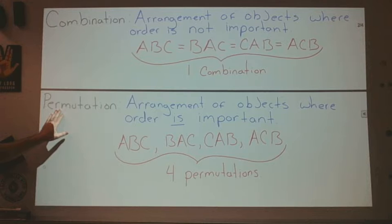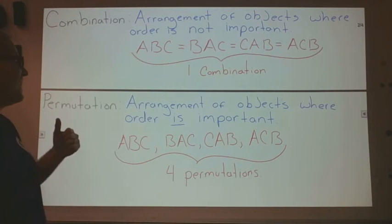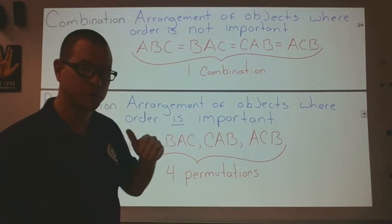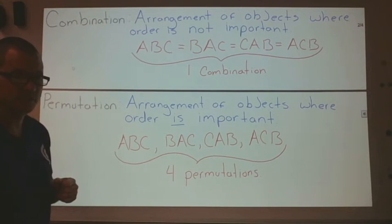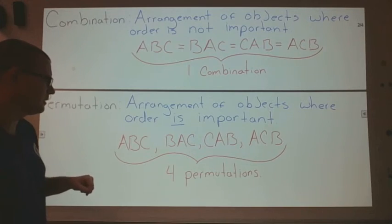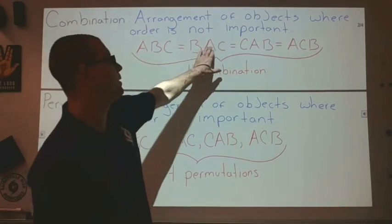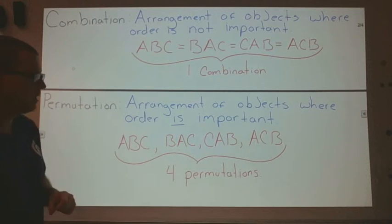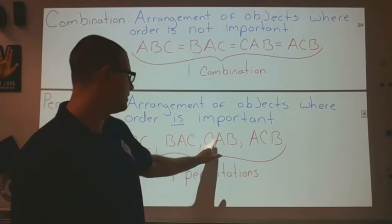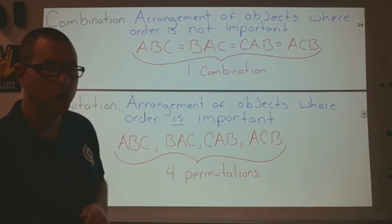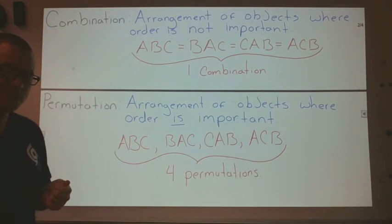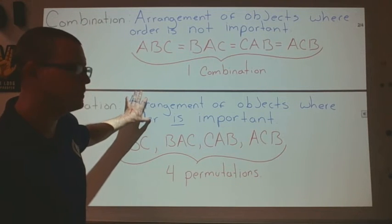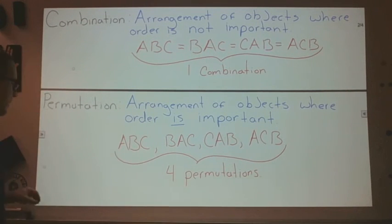Whereas for a permutation, the arrangement of the objects is important. So if you're running a race, you kind of want to know who was in first, who was in second, who was in third — that's a permutation. The order is important. So here, even though I have the exact same groupings of letters — A, B, C; B, A, C; C, A, B; A, C, B — this would be four permutations because the ordering of those objects changes each time. A permutation is when order is important. Now I'm going to look at two example problems of these, and then do some exercises on Khan Academy.